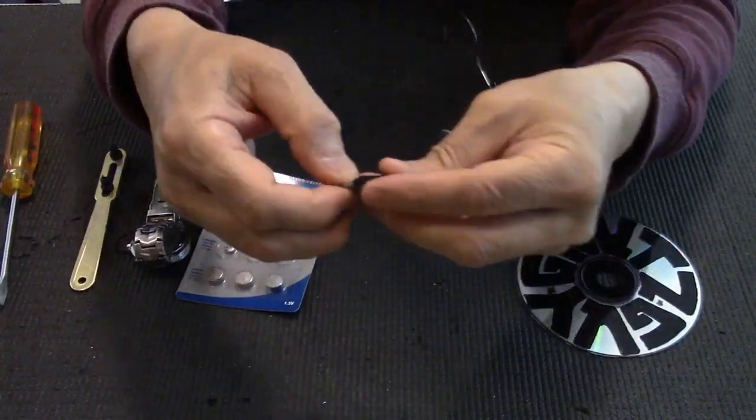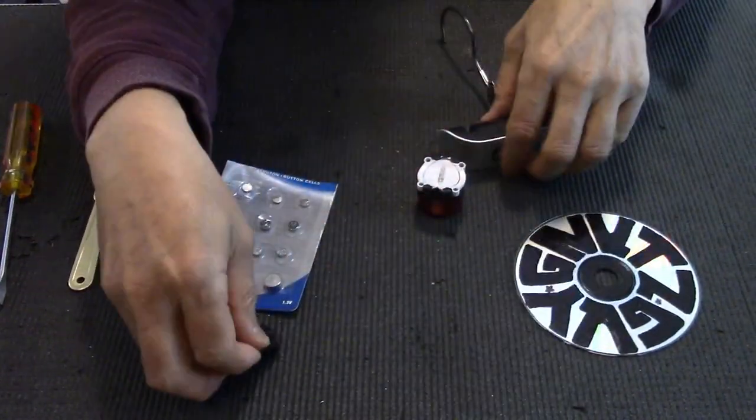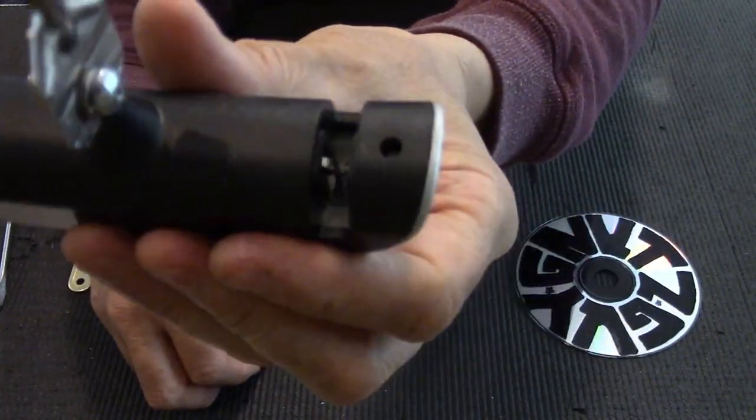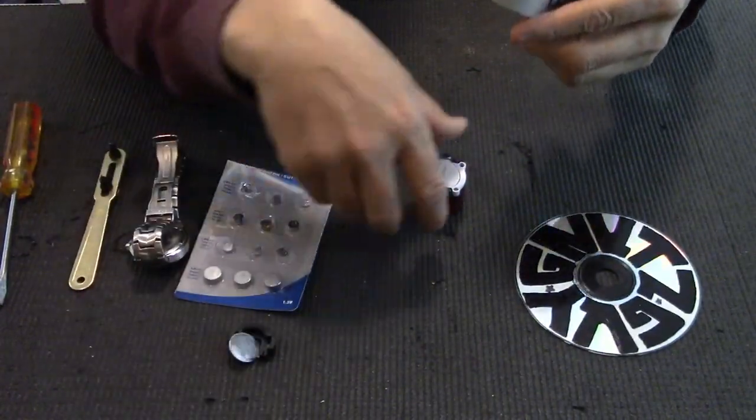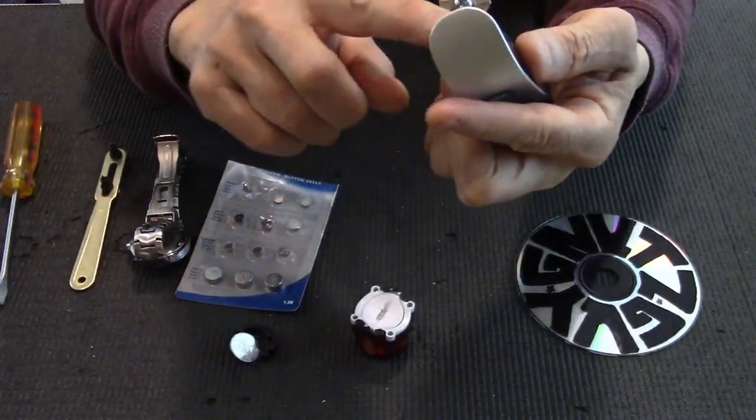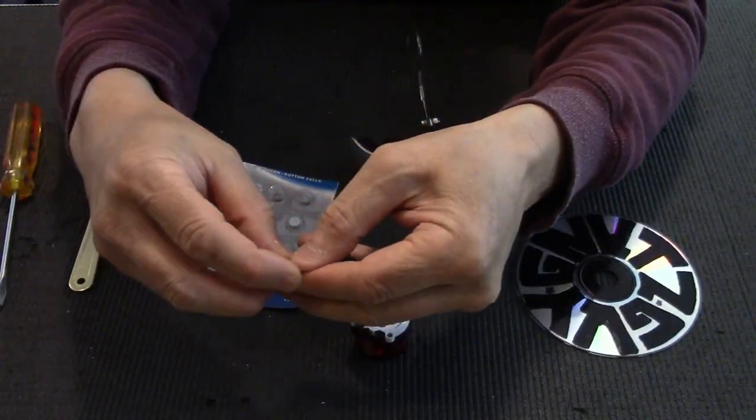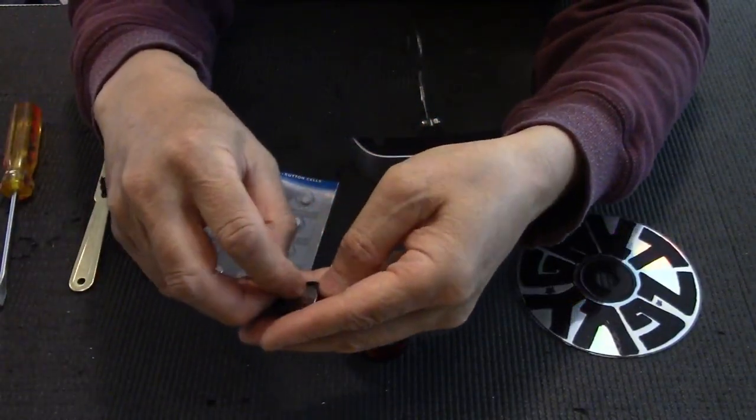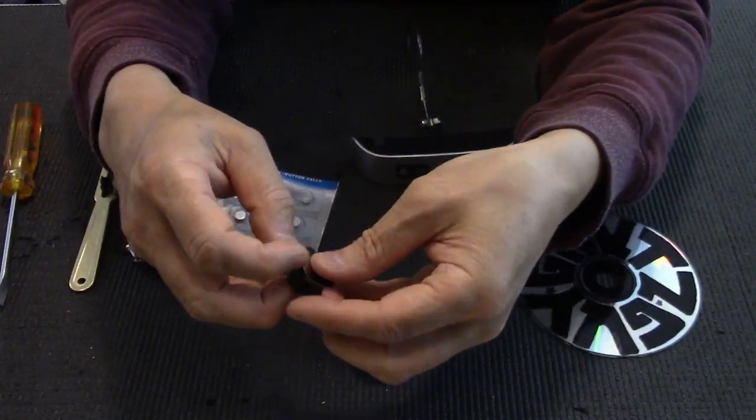Now this one also uses a 2032 and its contact is two metal pieces. If you were to find a device that the metal pieces are too far apart then what I would suggest you do is make a contact out of tin foil.